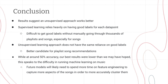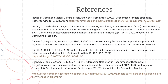In conclusion, our results suggest that an unsupervised approach works better because supervised learning relies heavily on having good labels for each data point, and it is difficult to get good labels without manually going through thousands of playlists and songs. An unsupervised learning approach does not have the same reliance on good labels, so it's a better candidate for playlist song recommendations. While at around 50% accuracy our best results were lower than what we hoped, this speaks to the difficulty of running machine learning on music, and future models will likely need to spend more time on feature engineering to capture more aspects of the songs in order to accurately cluster them. Here are our references, and thank you.